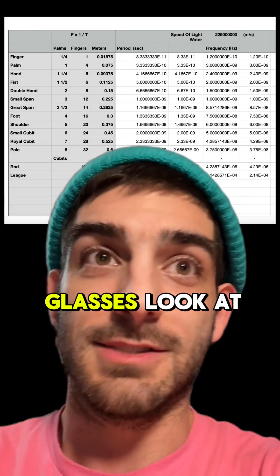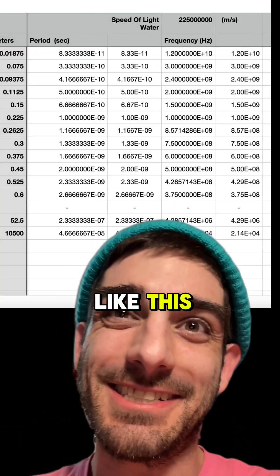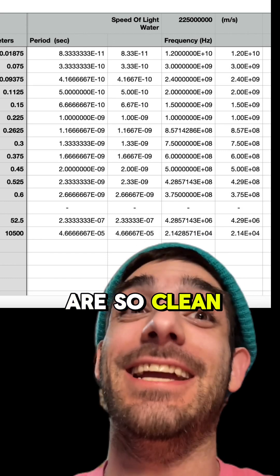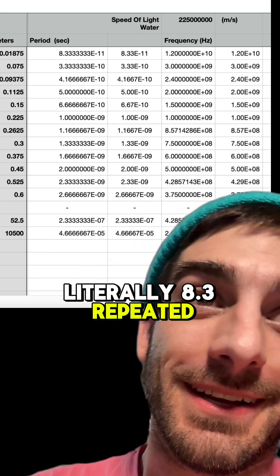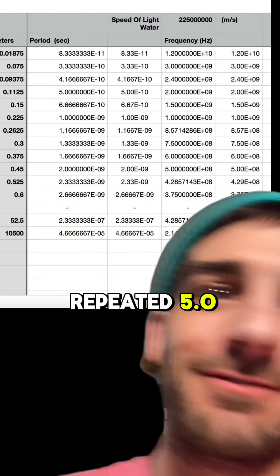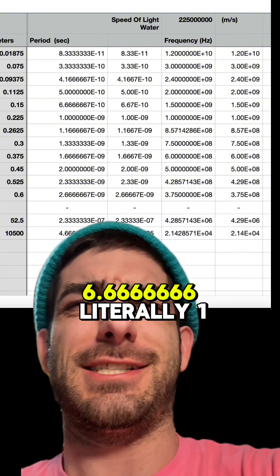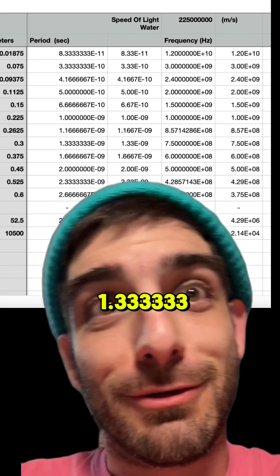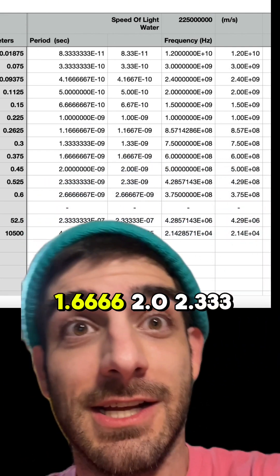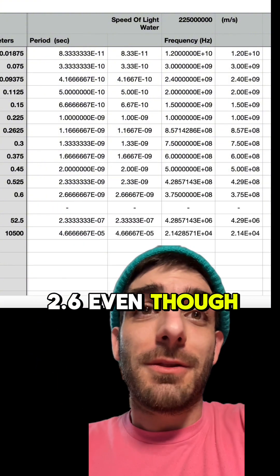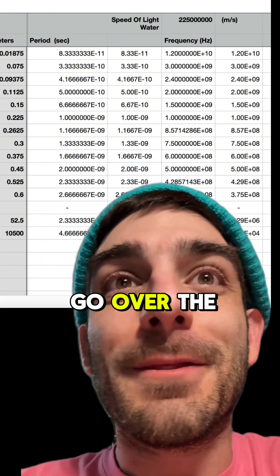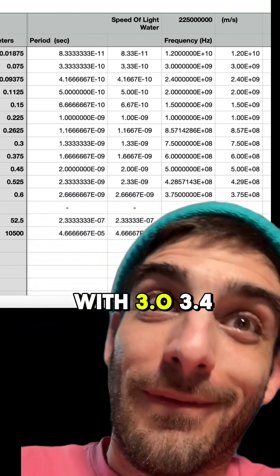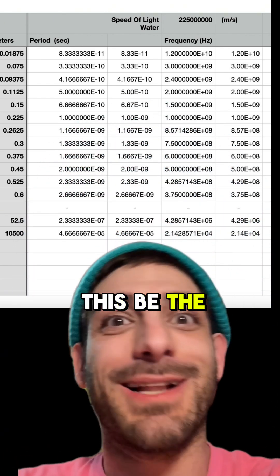Bam! Do you see this? Come on, it's not even just the period is nice, but the frequencies are so clean. Literally, 8.3 repeated, 3.3 repeated, 4.16 repeated, 5.0, 6.66666666, literally 1 nanosecond, 1.1666 nanoseconds, 1.333333, 1.6666, 2.0, 2.3333, 2.6. Then I go over the period and frequency, like, come on, 1.2, and with 3.0, 3.4, like, bam, do you see this? Speed of light and water.